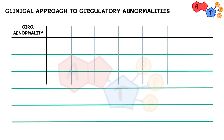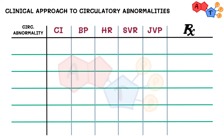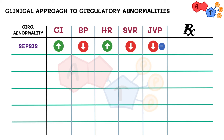Only one condition will have a high cardiac index, which happens due to increased body demand, and that is sepsis. Now having these three in mind, let's master this topic. The first condition shows high cardiac index and low SVR due to systemic vasodilation — this must be sepsis, and antibiotics would be the treatment. Remember that neurogenic shock can have a similar clinical picture but with low cardiac index.